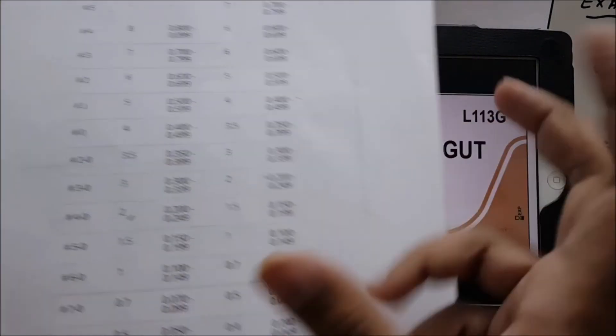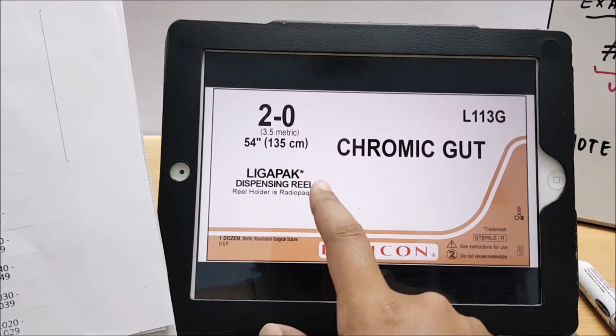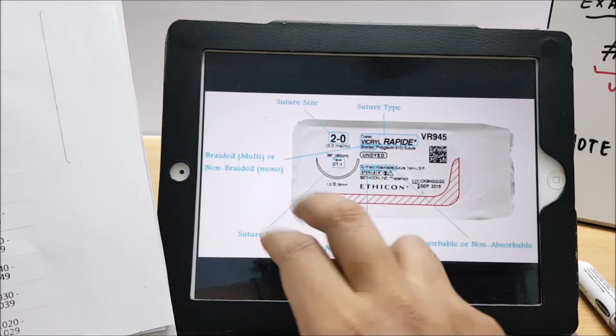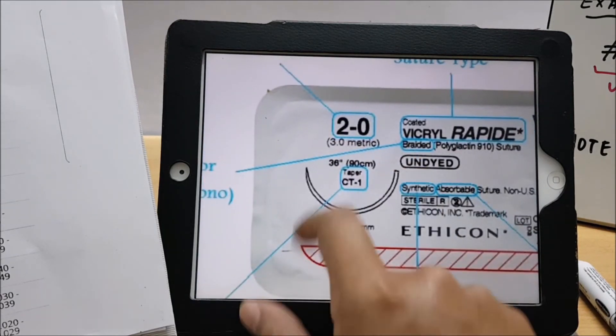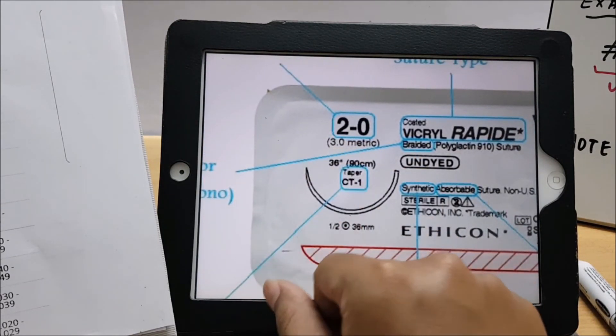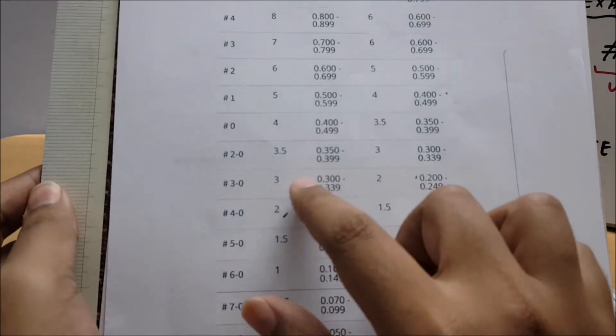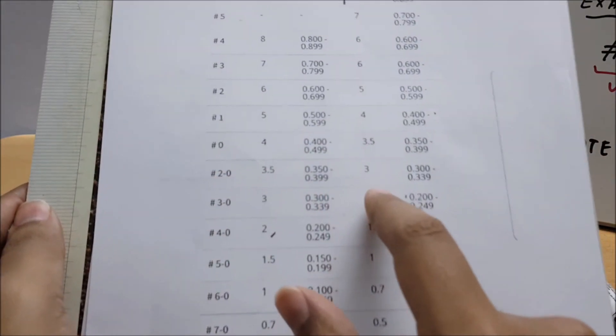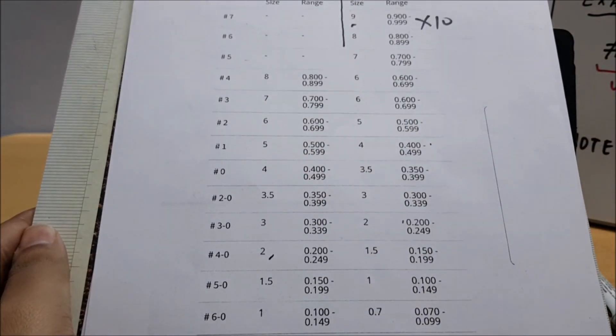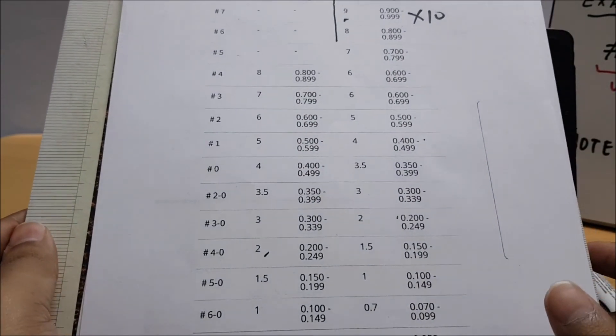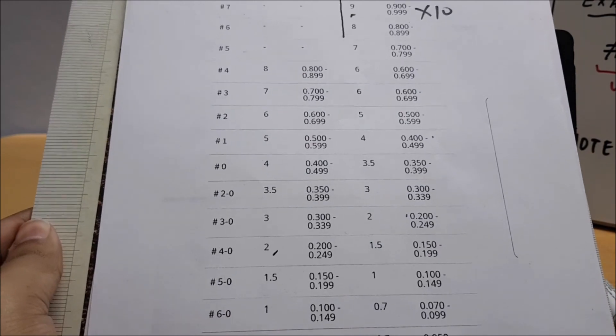Now let us see synthetic suture. You can see 2-0 - this is Vicryl, a synthetic suture. And see friends, here 3.0. You can see here 2-0, the metric size is 3. Yes. So I hope this video is very comprehensive. Please like and subscribe to my channel. Thank you, goodbye.